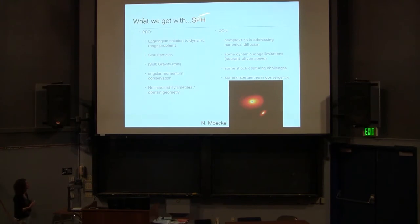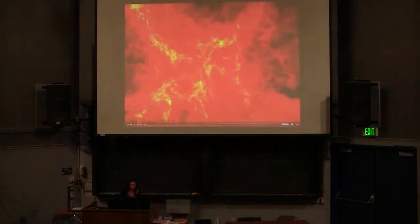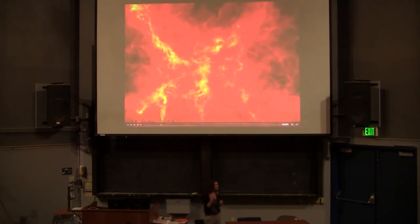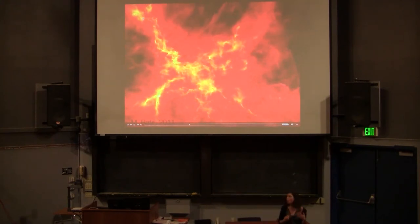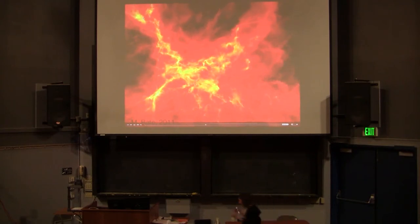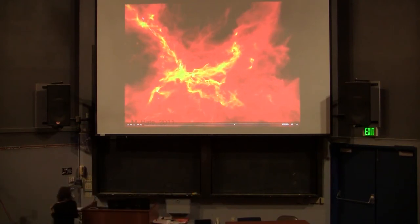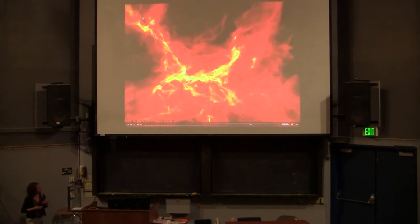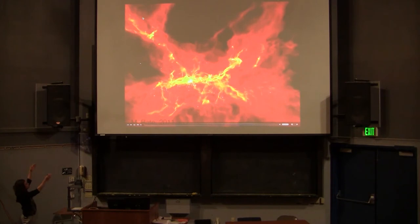You still have dynamic range limitations, challenges capturing shocks, and some uncertainties in convergence for some problems. But nevertheless, I'm going to show you a nice movie made with SPH — one of Matthew Bate's recent cluster and binary formation movies. This gives a nice sense of why SPH is so nice to use for these types of problems: your particles naturally follow your flow, and you don't have to worry about boundary conditions in the same way. You don't have to fill some arbitrary computational volume with material that you're not interested in simulating — every particle contributes to the problem you're interested in. Whereas if I built a big grid that occupied the entire volume, I would have to put something in the relatively empty space that didn't strongly affect my calculation.